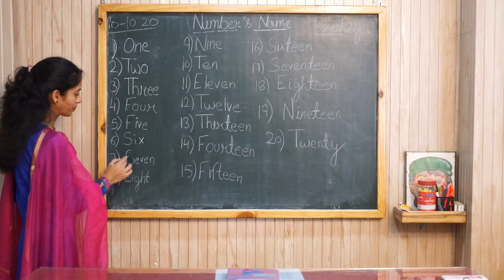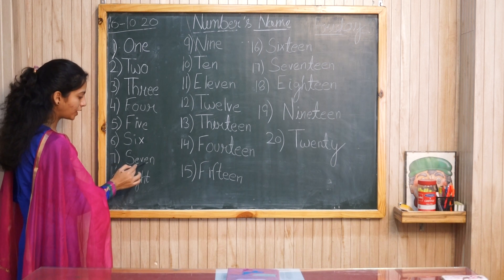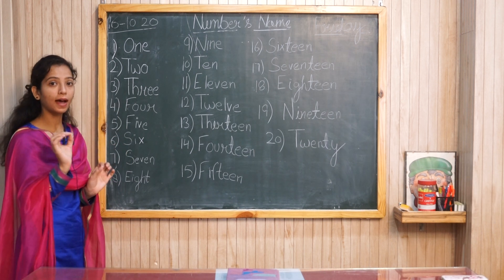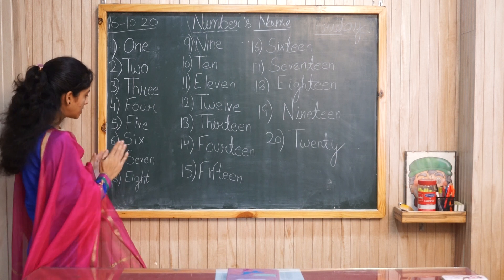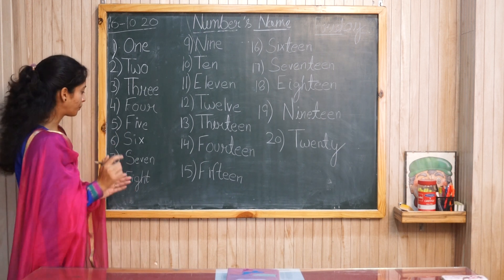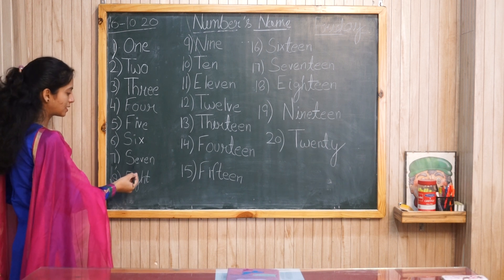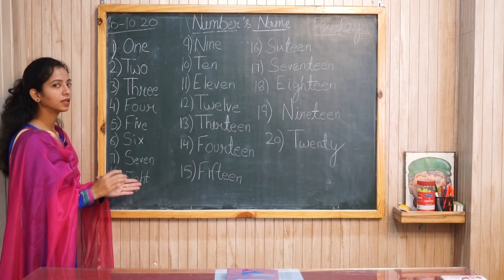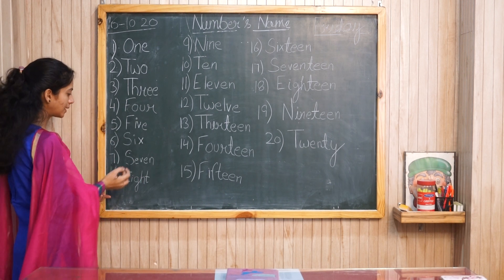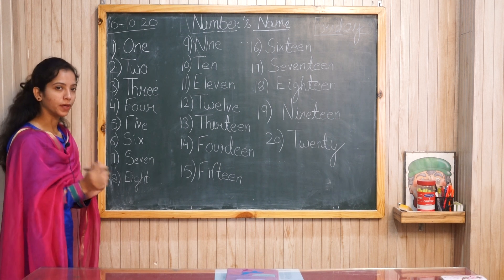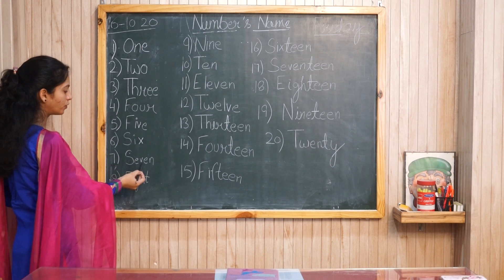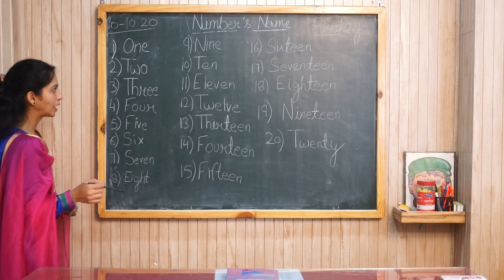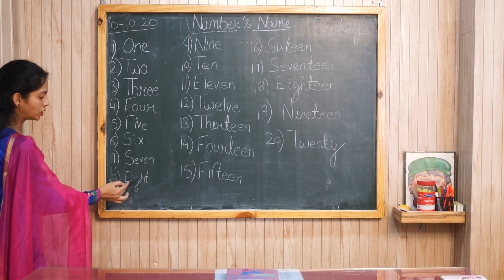Seven: S-E-V-E-N. Now the spellings we are reading — you should know how to memorize them. You should learn how to read the spelling. To remember S-E-V-E-N, memorize it by breaking it into small parts, two letters at a time.